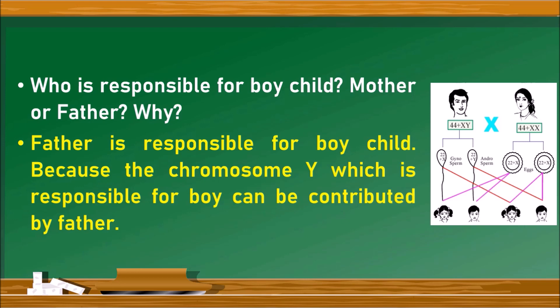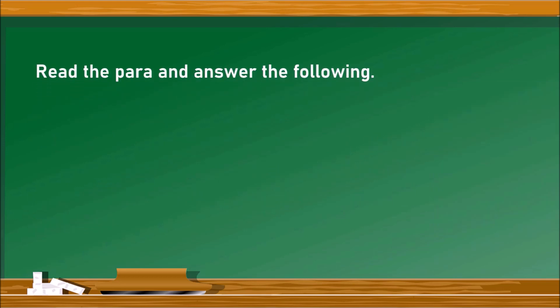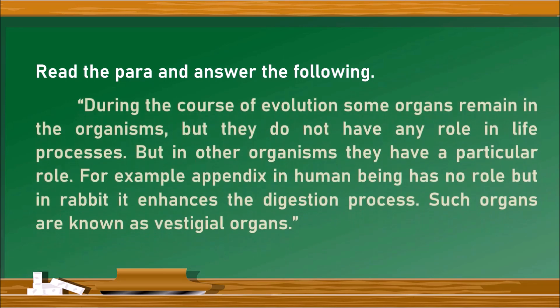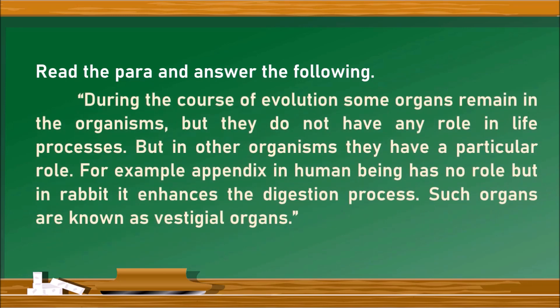Next question: read the paragraph and answer the following. The paragraph states: during the course of evolution, some organs remain in organisms but do not have any role in life processes, while in other organisms they have a particular role. For example, the appendix in human beings has no role, but in rabbits it enhances the digestion process. Such organs are known as vestigial organs.